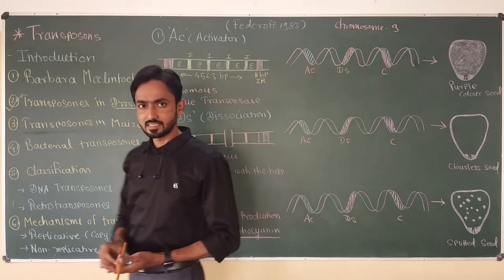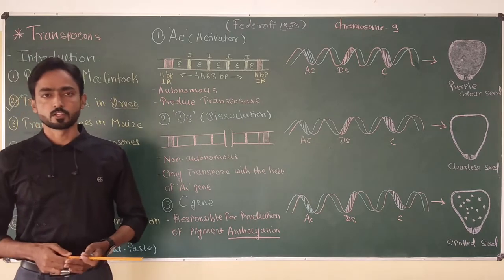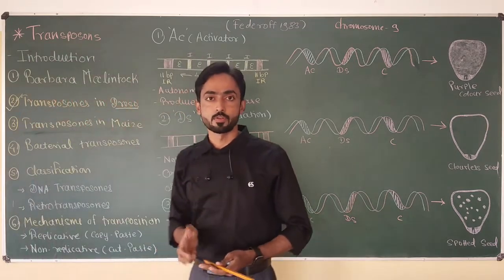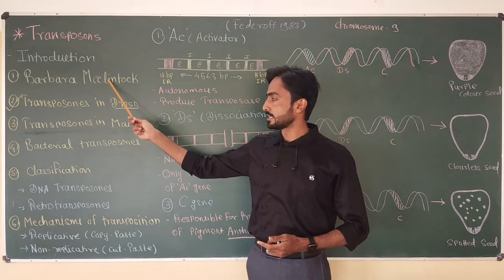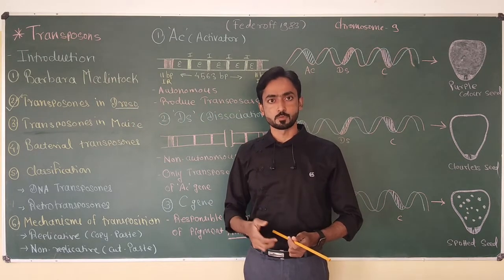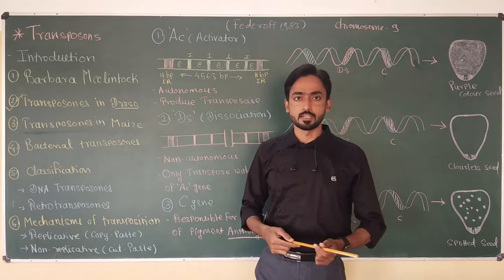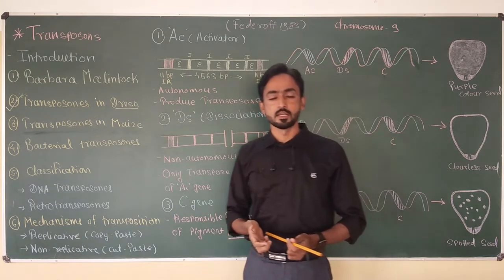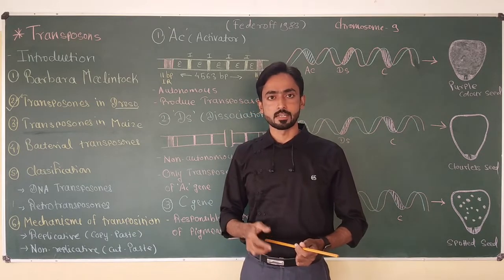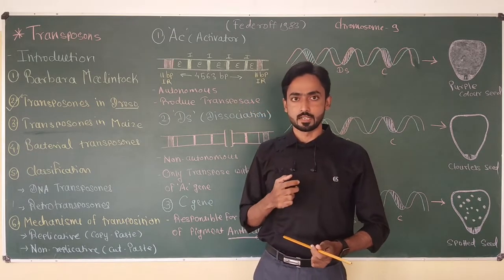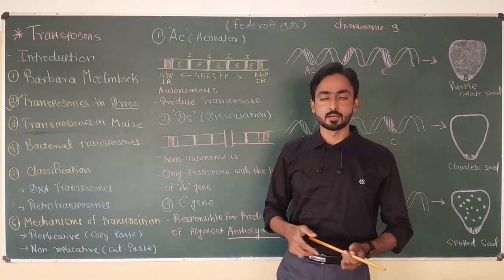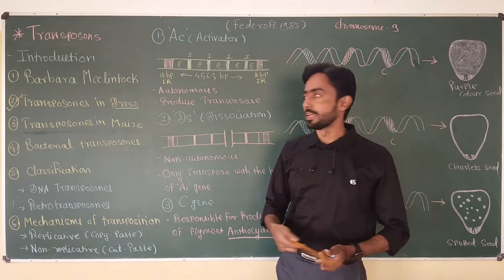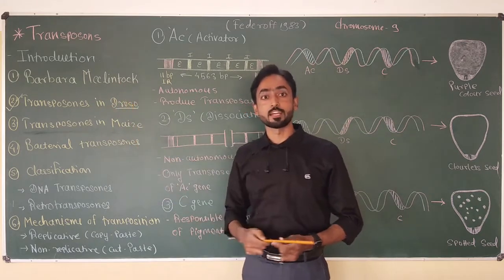In my previous video, I discussed the discovery of transposons made by Barbara McClintock in 1944. She was the scientist behind the discovery of this transposable element. She was born in 1902 and after completing her BSc and MS from Cornell College of Agriculture in 1925, she registered for her PhD in the subject of botany, which she completed in 1927. She then developed an interest in the field of cytogenetics.